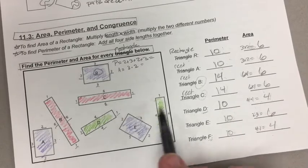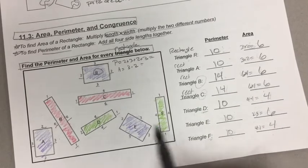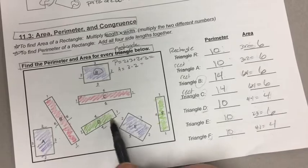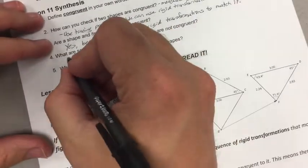D and E are definitely not congruent. So what are some ways we know? We could measure.